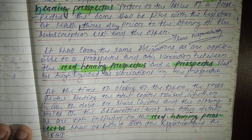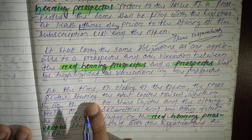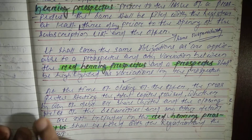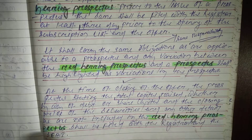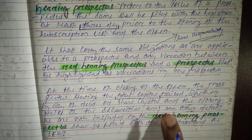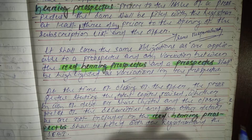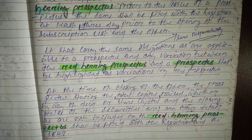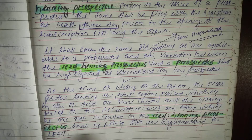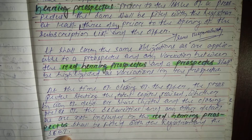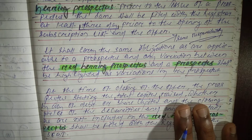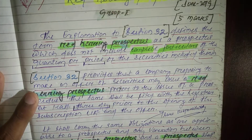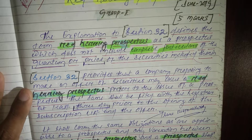At the end of the offer, the prospectus stating the total capital raised — whether by way of debt or share capital — and the closing price of the securities, along with any other complete information not included in the Red Herring Prospectus, shall be filed with the Registrar and the Securities Exchange Board of India.